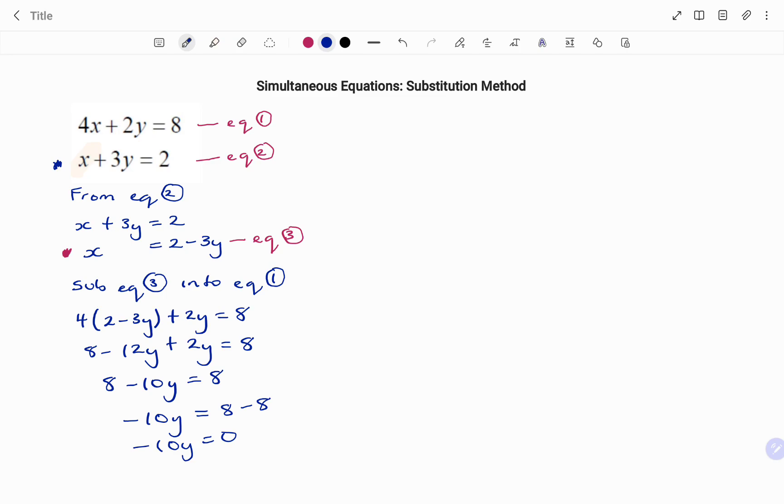If I divide both sides by minus 10, whatever you do on your left, you do on your right. Therefore, my y is equal to 0. 0 divided by minus 10 is 0. Because I know the value of y to be 0, I'm going to substitute y equals 0 into equation 3.